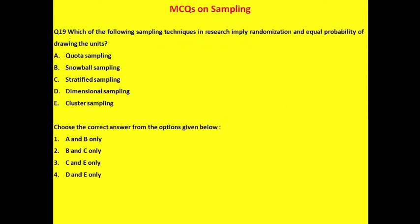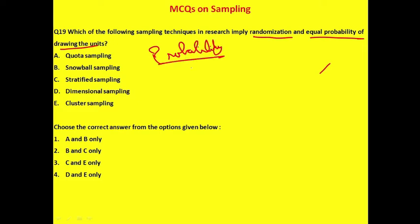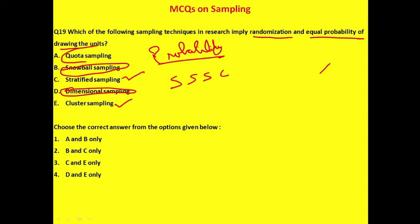Question 19: Which sampling techniques imply randomization and equal probability of selecting units? This refers to probability sampling. Using the triple SC formula — simple random sampling, stratified random sampling, systematic sampling, and cluster sampling — the correct answers are options C and E: stratified sampling and cluster sampling.